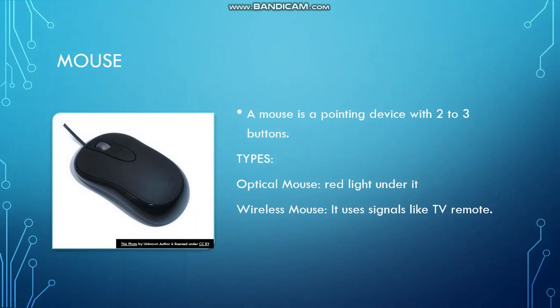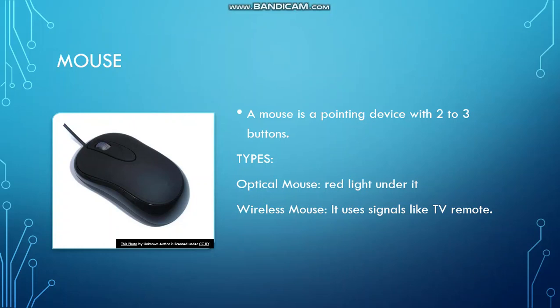Our next input device is mouse. Mouse is basically a pointing device — by using mouse we can point something on our laptop or computer. Basically there are two kinds of mouse: the optical mouse and the wireless mouse. The mouse with the wire is called an optical mouse and it has a red light under it. A wireless mouse does not have any wire and it uses signals like a TV remote or AC remote, which are also wireless devices. Nowadays in the market you will find wireless mice which use signals like TV remotes or AC remotes.